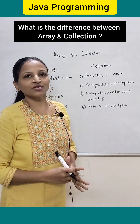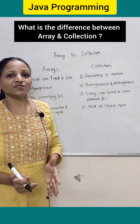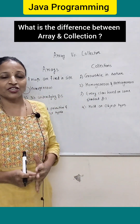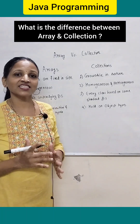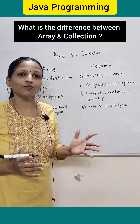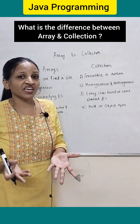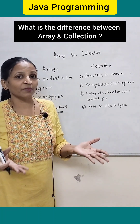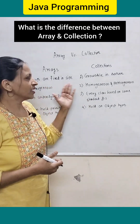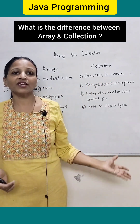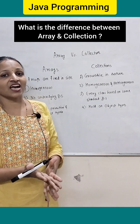Arrays are fixed in size — they are a static data structure; you cannot increase or decrease their size at execution time. Whenever you know the number of elements in advance, arrays are recommended. Collections, on the other hand, are growable in nature — you can change and increase their size as per your need.